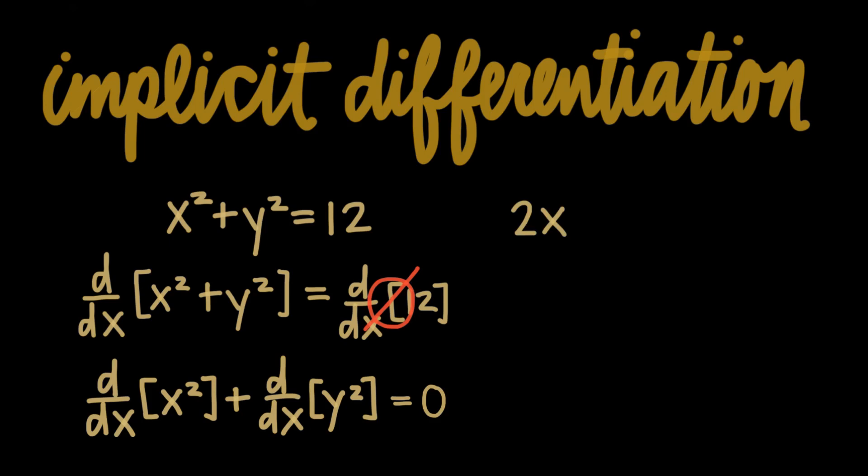And then we come to the y squared, and it seems pretty weird. How can we differentiate y squared with respect to x? Here's what implicit differentiation tells you to do. First, take the derivative as normal, so here we'll use the power rule again to get 2y.